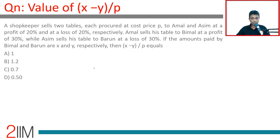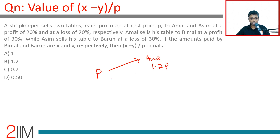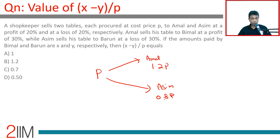A shopkeeper sells two tables, each procured at cost price P, to Amal and Asim at a profit of 20% and a loss of 20% respectively. So he sells to Amal at 1.2P and to Asim at 0.8P. Now, Amal sells his table to Bimal at a profit of 30%.